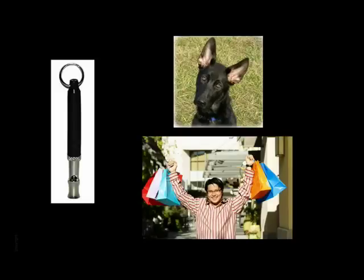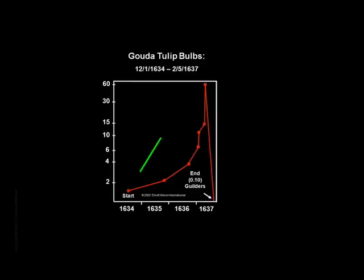This example illustrates two characteristics of bubbles. First, that they are self-reinforcing on the way up, meaning that higher prices become the justification for higher prices. And second, that once the illusion is lifted, the game is suddenly and permanently over.